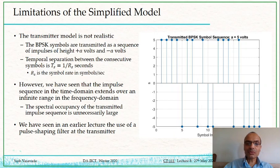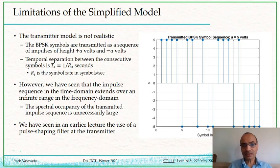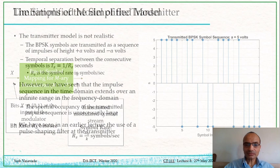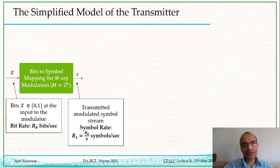That is where one additional layer of complexity we add to this simplified model comes in: what is known as pulse shaping. We have already described pulse shaping at the transmitter in an earlier lecture, where we converted each of these impulses into either a triangular, rectangular, or square-root raised cosine pulse, making use of the convolution operation to do so.